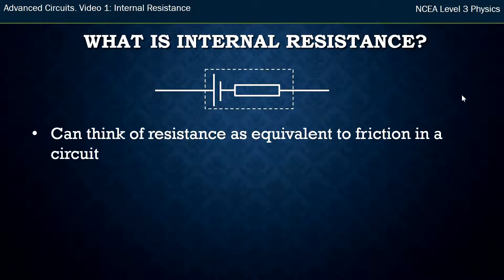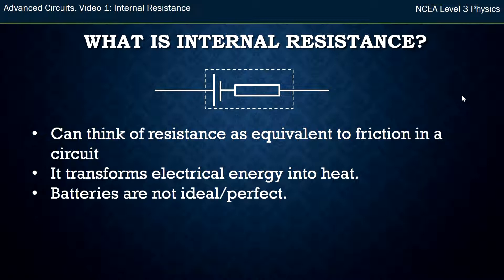So resistance, you can think of as equivalent to friction, when you've got mechanical objects moving. Friction in a circuit, just like friction and anything moving, converts something to heat. And so in this case, resistance converts electrical energy to heat. And that's what's happening inside the battery, because the battery is not ideal.